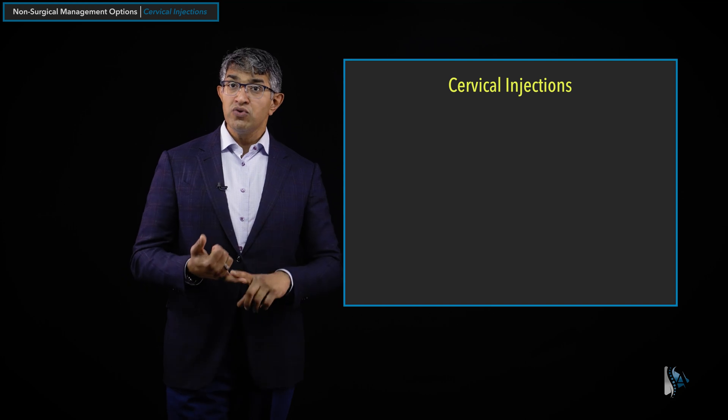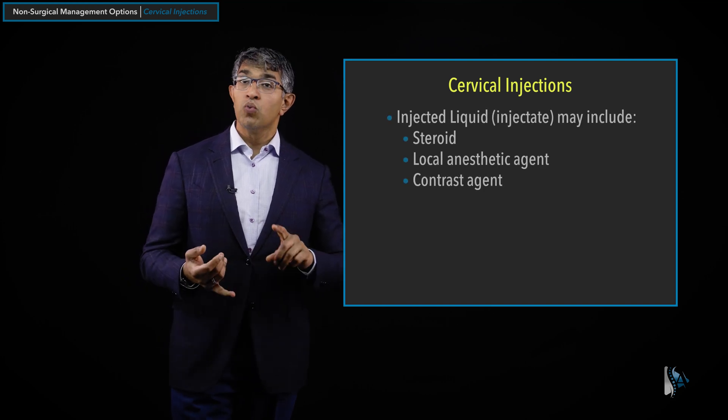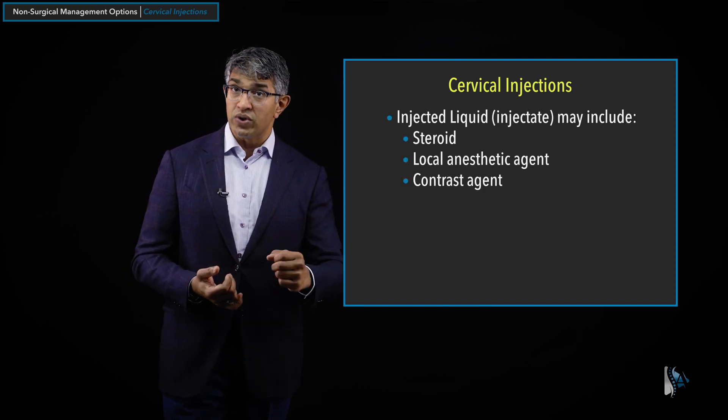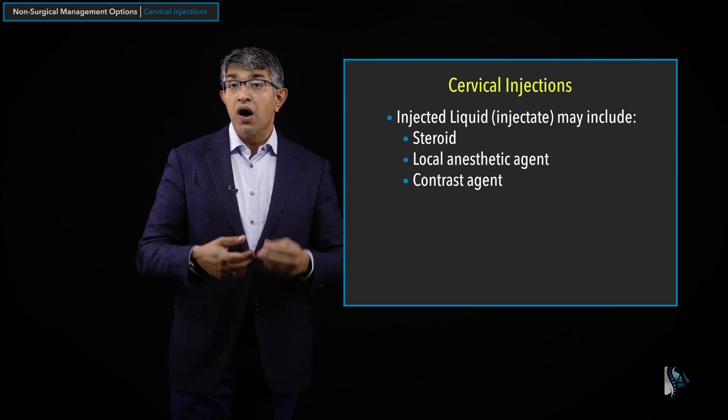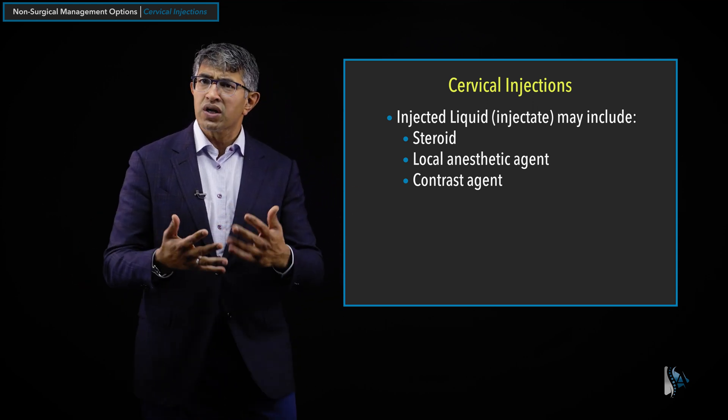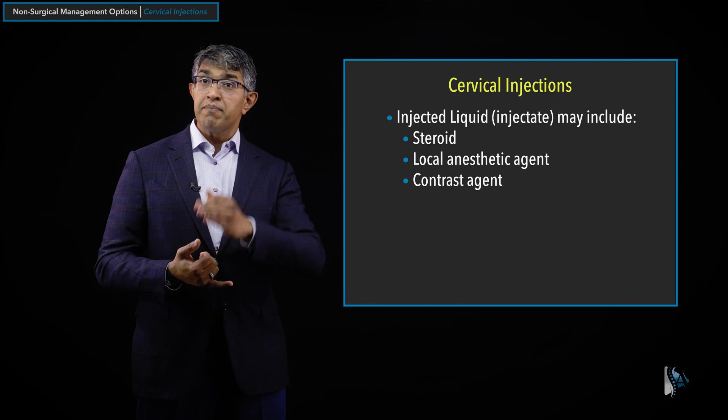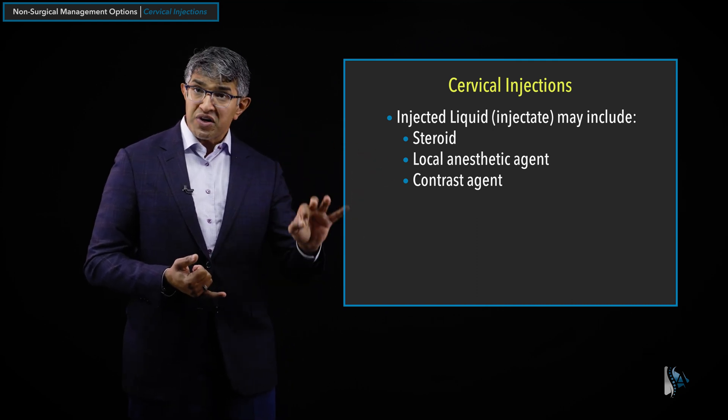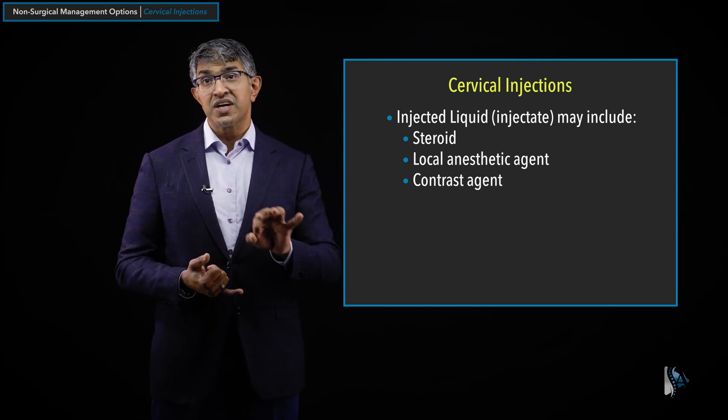Looking at cervical injections more closely, when they're injecting, they're injecting a liquid. The liquid can have different components, and the person doing the injection composes it, specifying the type of steroid and type of anesthetic. You can think of the ingredients in that liquid as being one of three categories. One of them is a steroid — that's why we call them epidural steroid injections. The steroid is what gives people the anti-inflammatory effect. It doesn't take effect right away — it sometimes takes a few days to cool the nerve off, but the steroid is probably the most important ingredient.